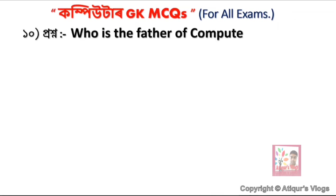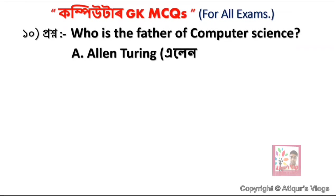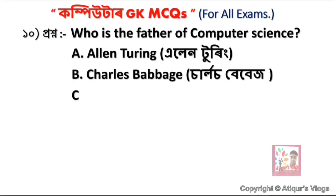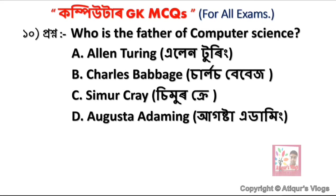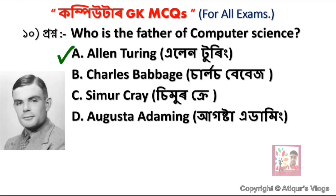Question 10: Who is the father of computer science? Option A is Alan Turing, option B is Charles Babbage, option C is Moore, and option D is Augusta Ada Lovelace. Many consider Charles Babbage as the father of the computer, but for computer science specifically, the correct answer is Alan Turing.